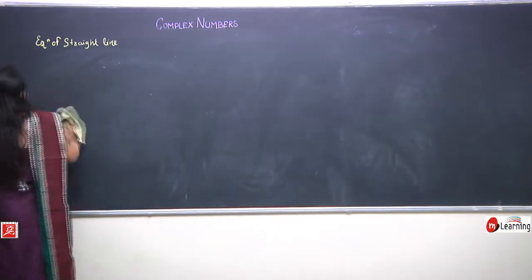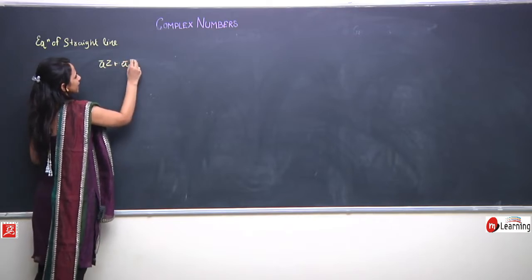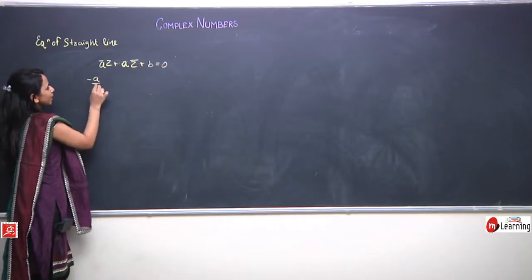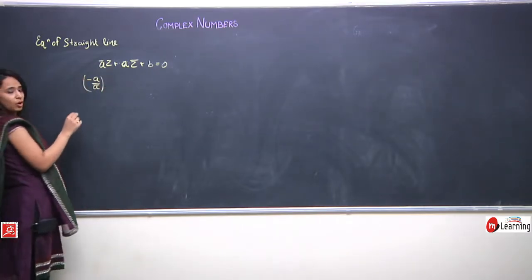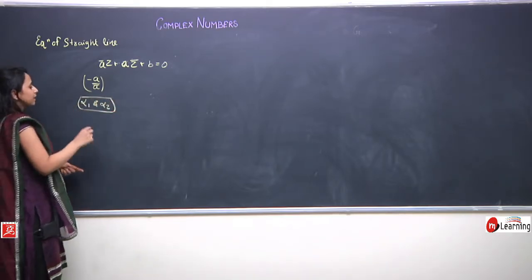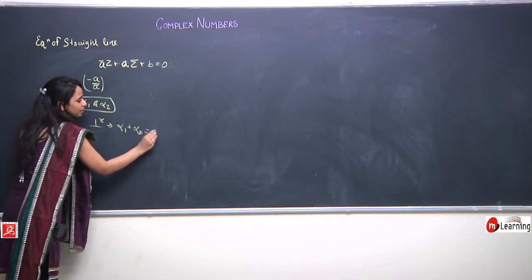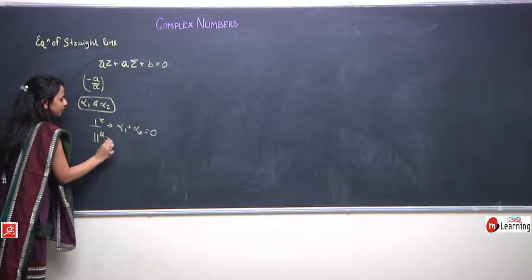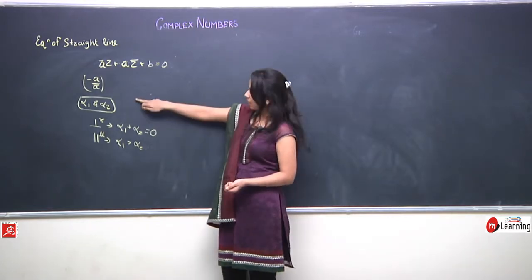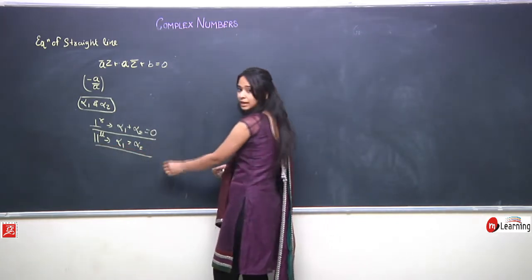Let us now discuss the general equation of a straight line further. If two lines have complex slopes α1 and α2, the condition for them to be perpendicular is α1 + α2 = 0, and the condition for them to be parallel is α1 = α2. For two lines a1·z̄ + ā1·z + b = 0 and a2·z̄ + ā2·z + b = 0 to be perpendicular, we need a1·ā2 + a2·ā1 = 0. For them to be parallel, a1·ā2 - a2·ā1 = 0.